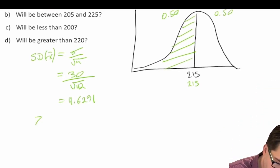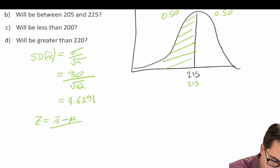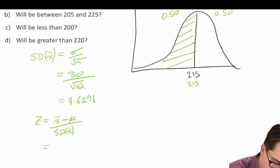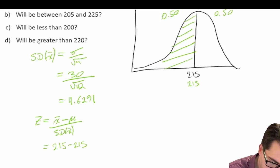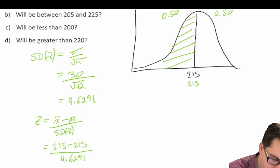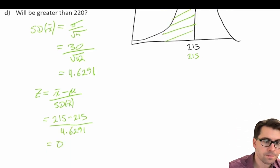We're going to calculate our z-score. Z is equal to x-bar minus the mean of our population divided by our standard deviation of x-bar. In this case, 215 minus 215 divided by 4.6291 gives us a z-score of 0.